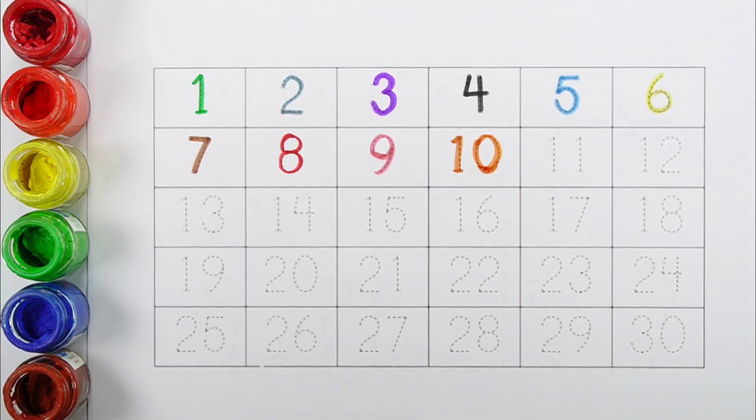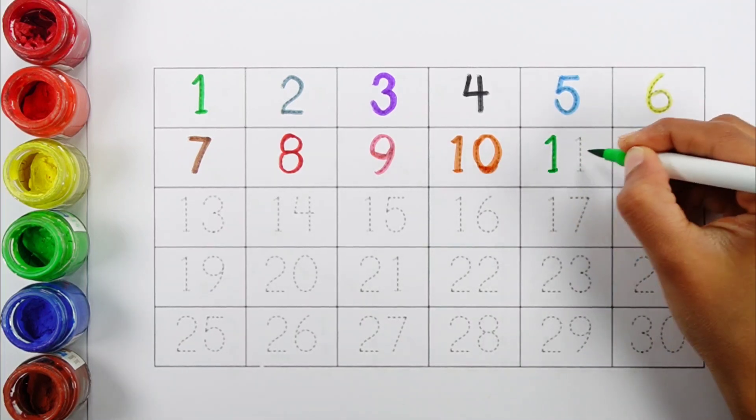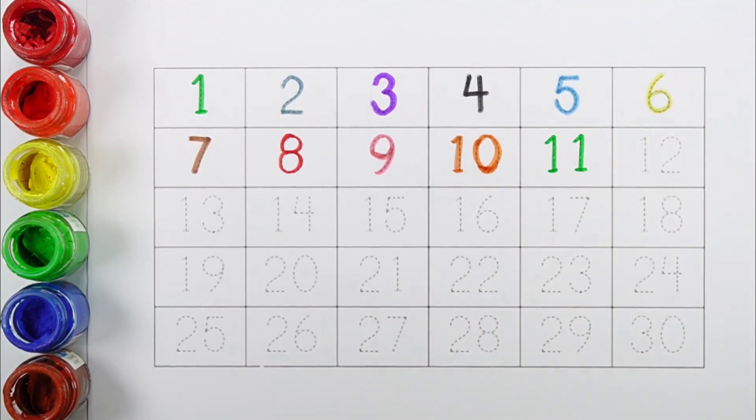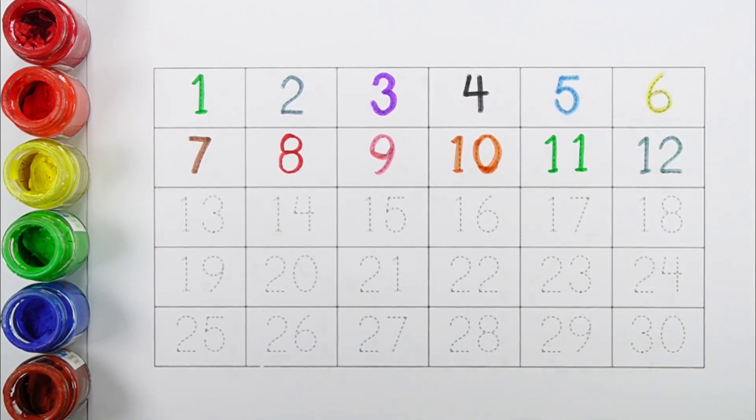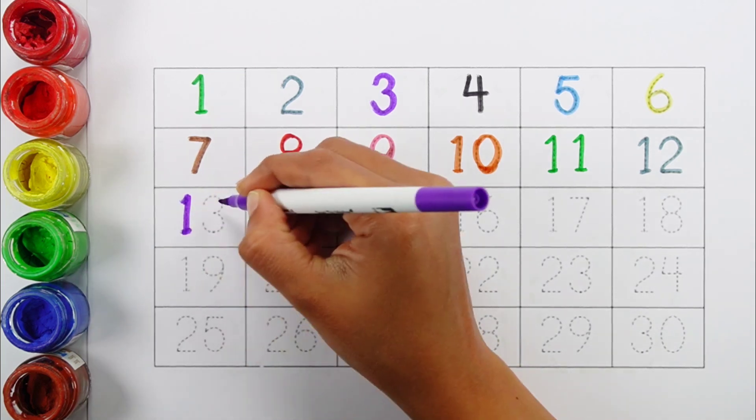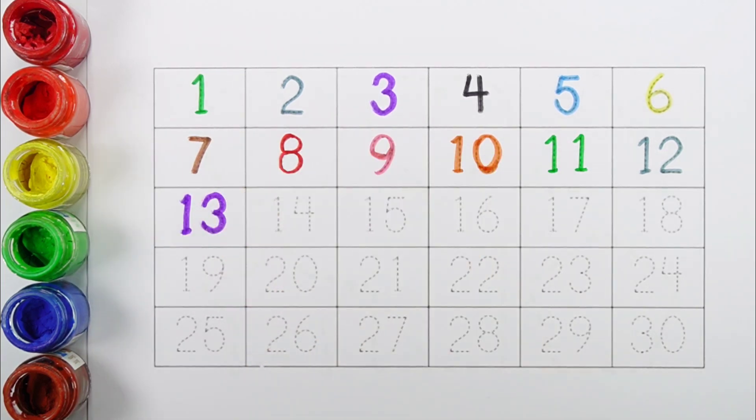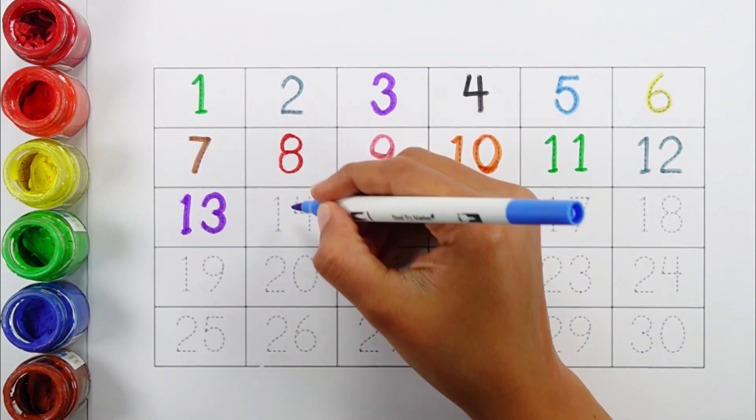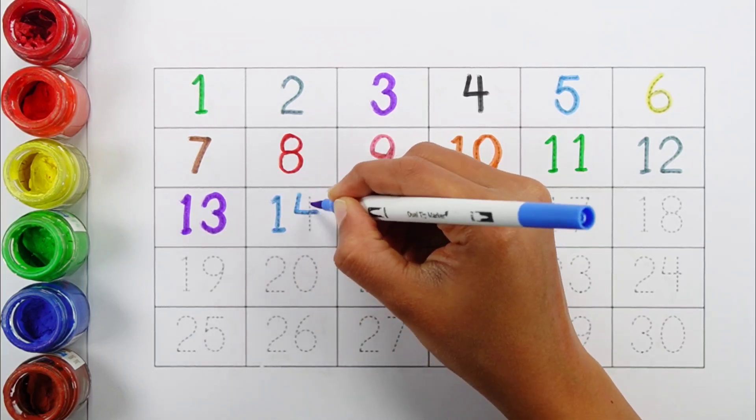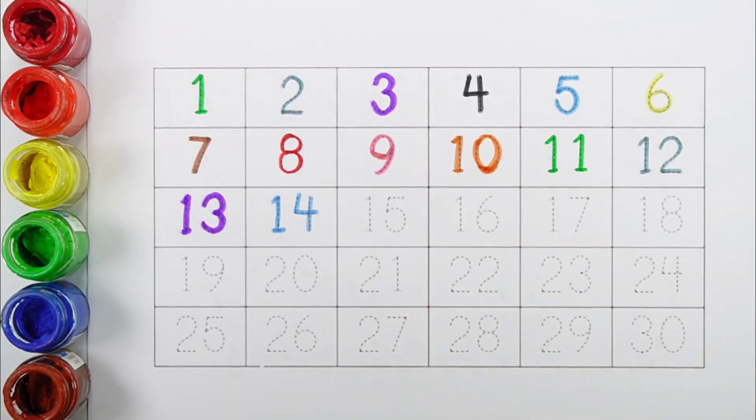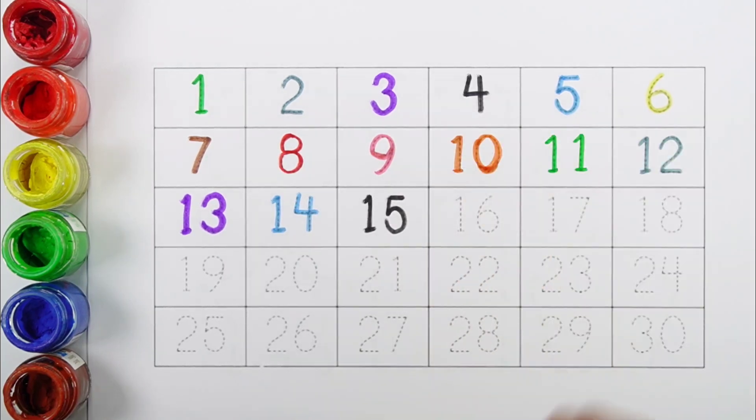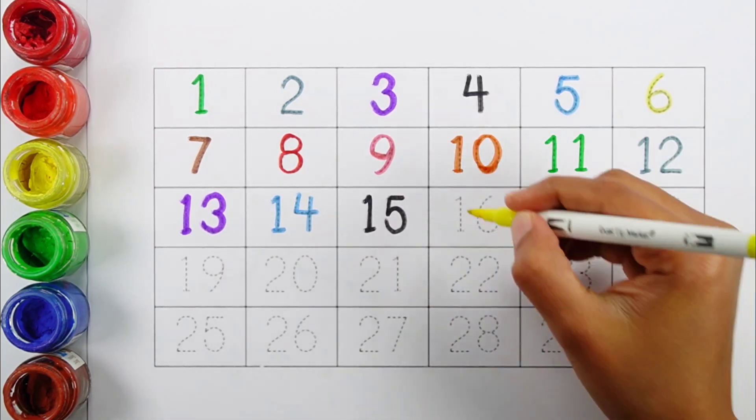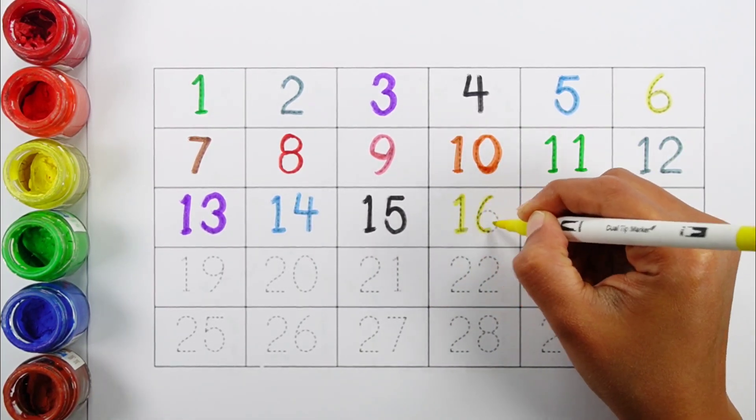11, 12, 13, 14, 15, 16, 17, 18, 19, 20, 21, 22, 23, 24, 25, 26, 27, 28, 29, 30. 11, 12, 13, 14, 15, 16.